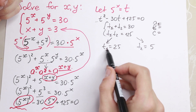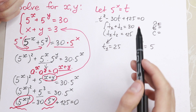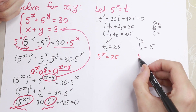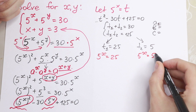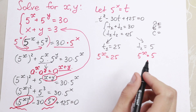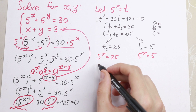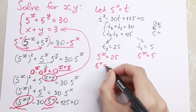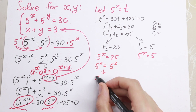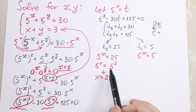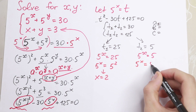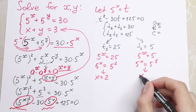Let's solve each equation. Firstly, t1 equals 25, and since 5 to the power x equals t, we have 5 to the power x equals 25. This is a classic exponential equation: 5 to the power x equals 5 squared, because 25 equals 5 squared, so x equals 2. For the second case, t2 equals 5, so 5 to the power x equals 5 to the first power, and from here x equals 1.